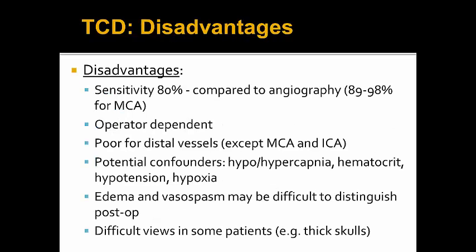The disadvantages are that sensitivity is only 80% compared with traditional angiography. However, sensitivity is 89 to 98% specifically for the MCA, which is the vessel we're most interested in. Other disadvantages are that it's still operator-dependent, poor for distal vessels except for the MCA and ICA. There are potential confounders like hypo- and hypercapnia which can affect vessel blood flow, hematocrit in terms of blood viscosity, hypotension, and hypoxia. Edema and vasospasm might be difficult to distinguish post-op, and difficult views are found in some patients who may have thick skulls at the temporal window.